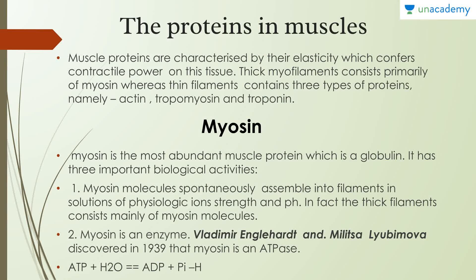The muscle proteins are characterized by their elasticity, which confers contractile power on the tissue. Thick myofilaments consist primarily of myosin, whereas thin filaments contain three types of proteins: actin, tropomyosin, and troponin.